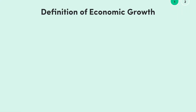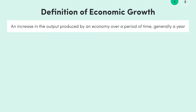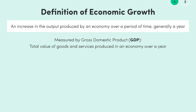A good place to start is the definition of economic growth. Economic growth is defined as an increase in the output produced by an economy over a period of time, generally a year. In order to measure this output, we look at Gross Domestic Product, or GDP, the total value of goods and services produced in an economy over a year.